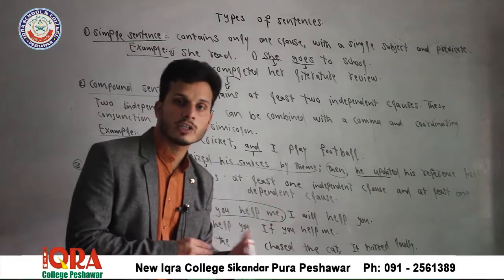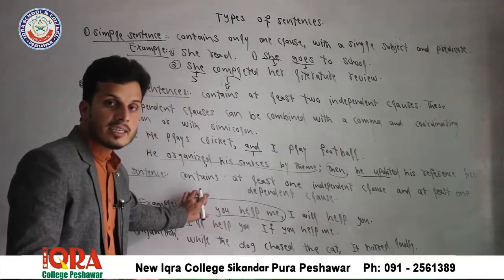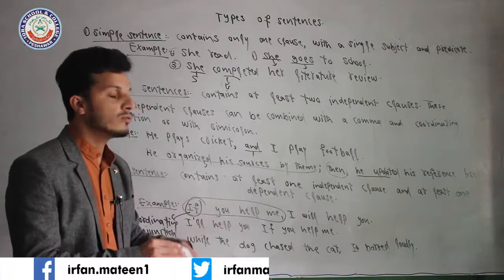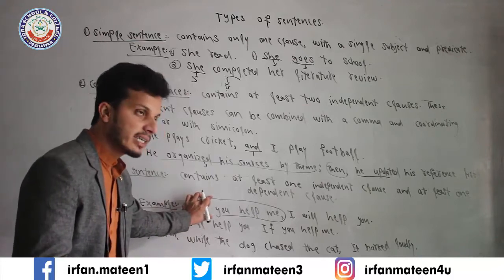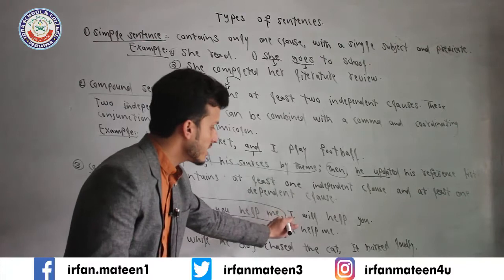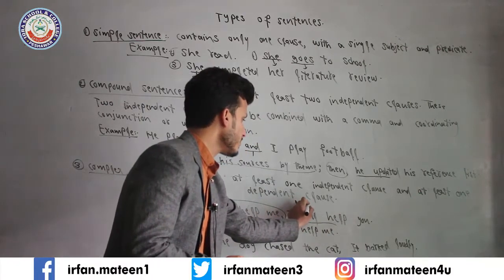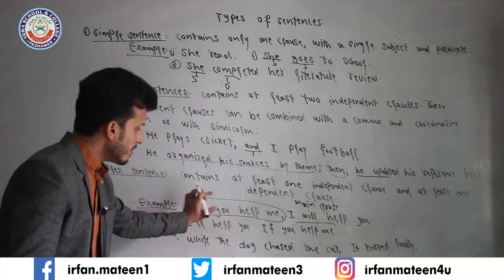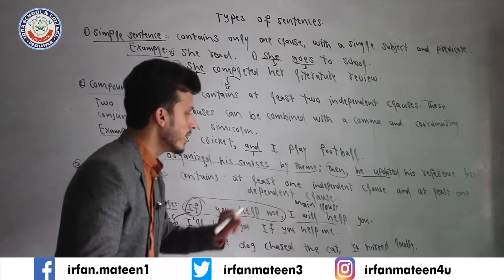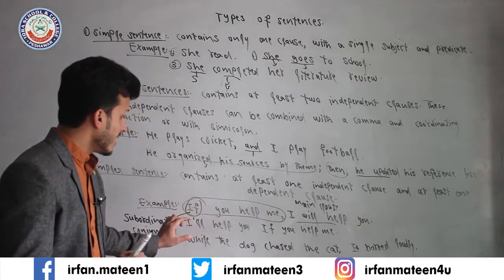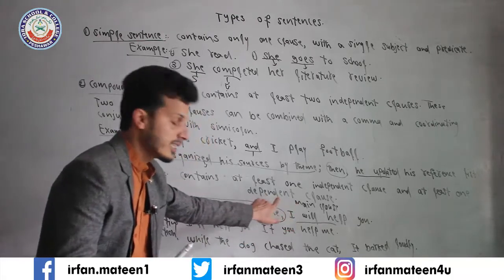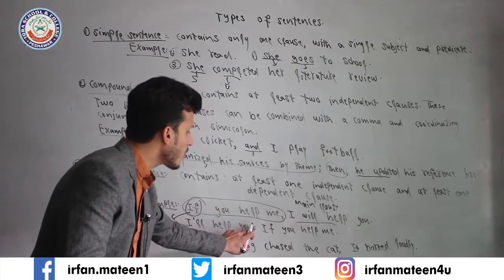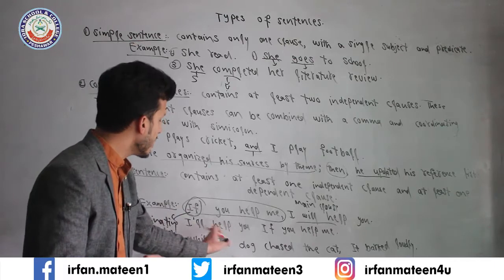Yeh dependent clause hai kyunke 'if' aaya hai. 'If' ko hum subordinating conjunction kehte hain. Is wajah se yeh dependent clause hota hai, aur yeh independent clause hota hai. 'If you help me' — agar aap meri madad karoge — to 'I will help you' — main bhi aap ki madad karunga. Yeh dependent class hai, is ka depend main clause pe hota hai. Yeh main class hai. Yeh baat yaad rakhein: 'I will help you if you help me' — agar aap independent class pehle place karte hain to then there is no need to put comma after this.